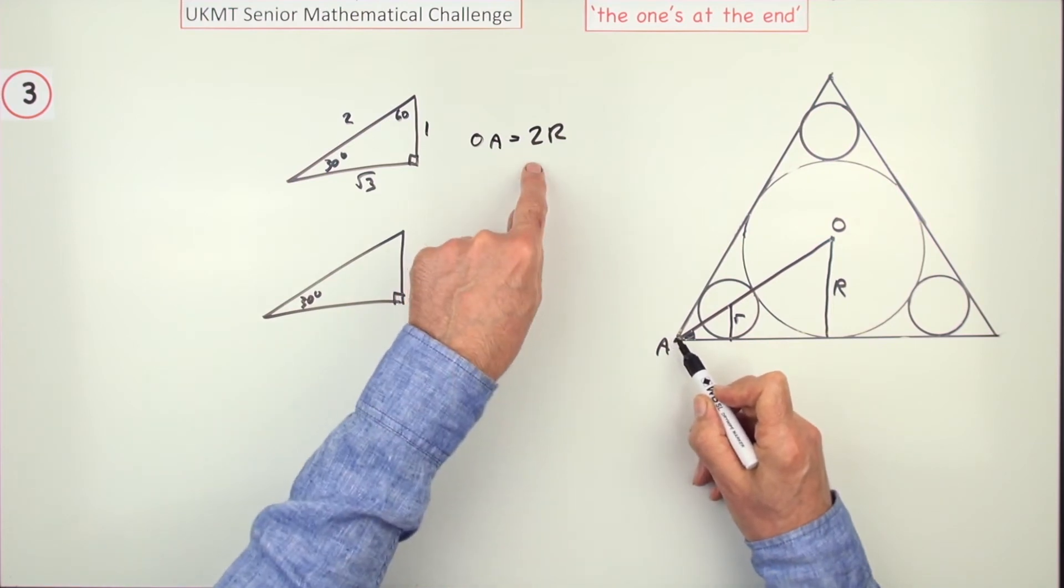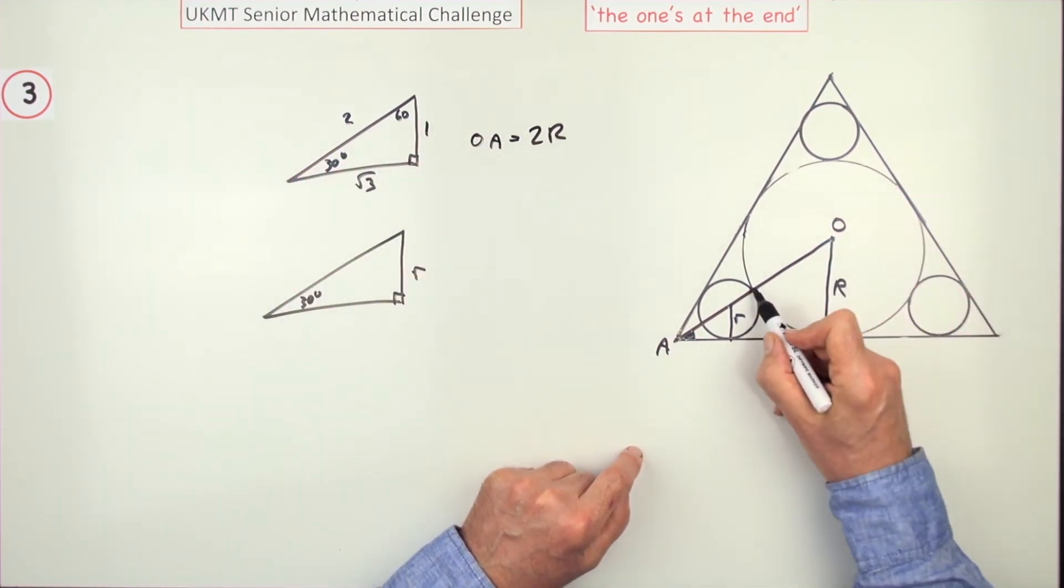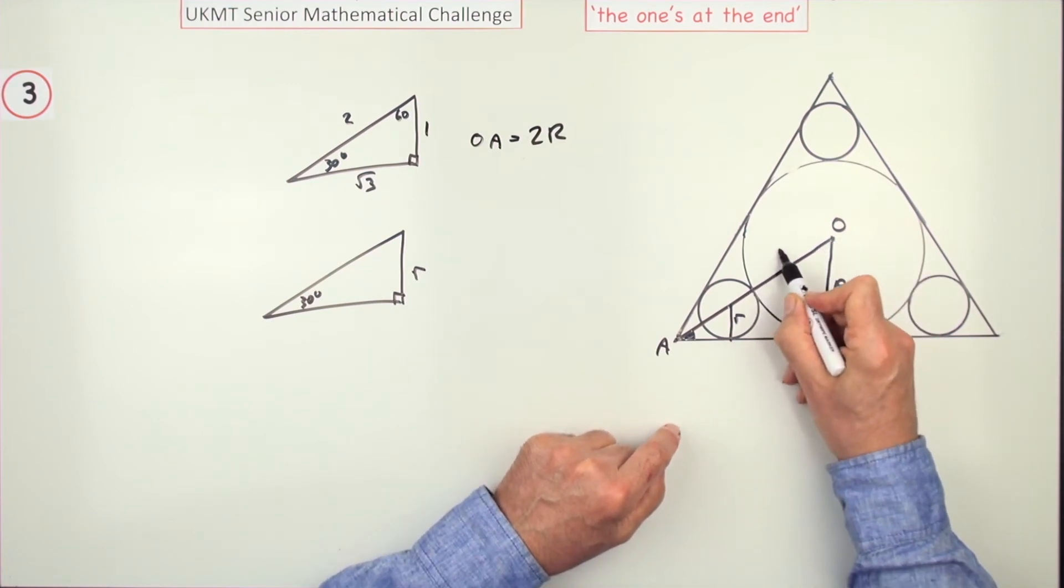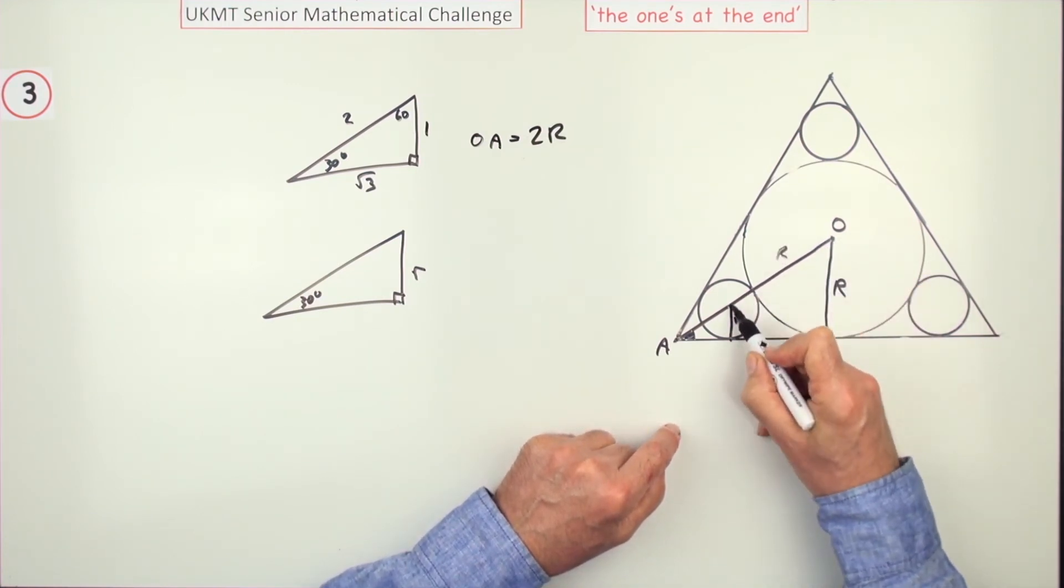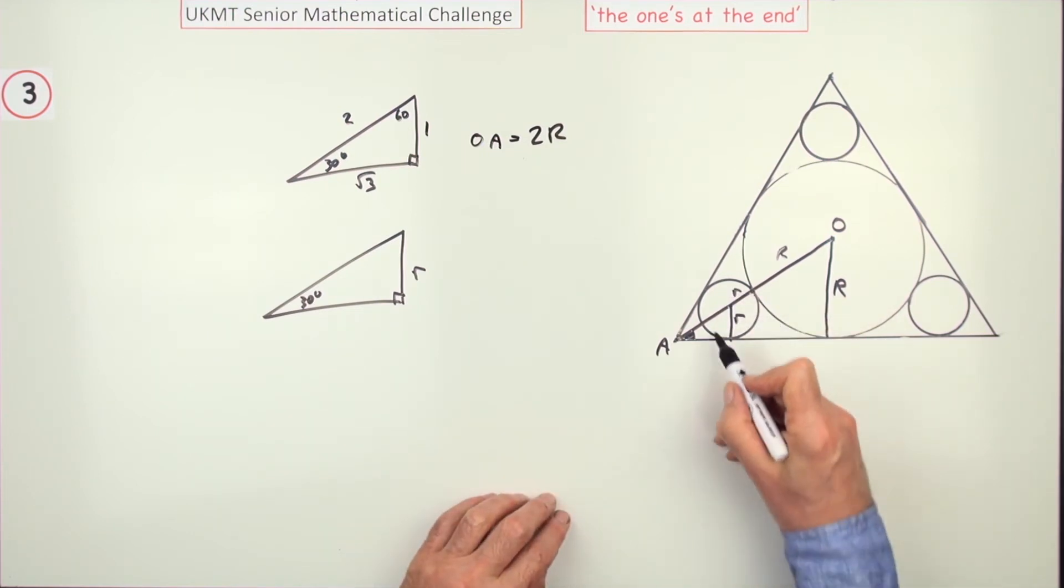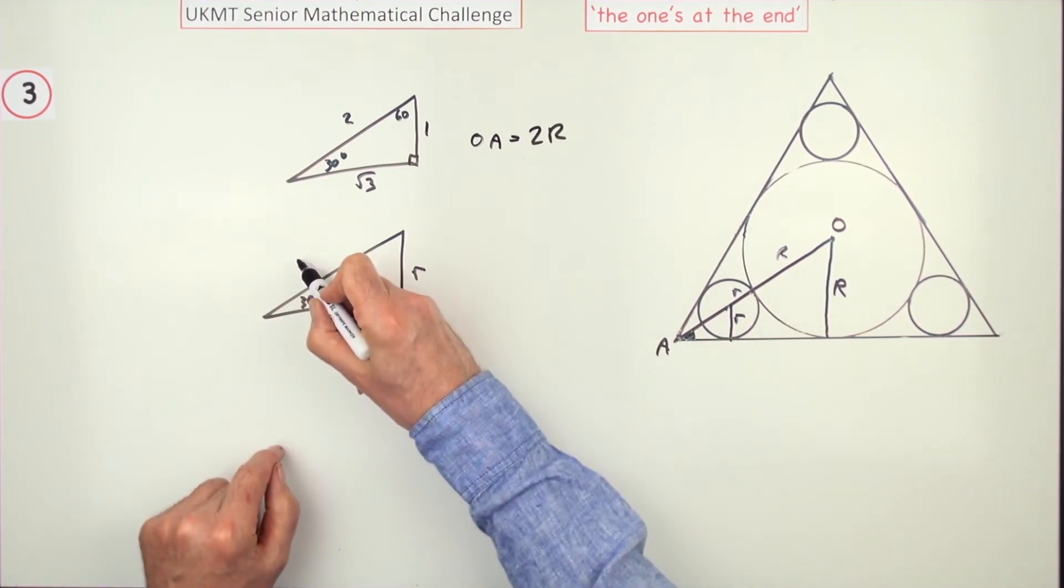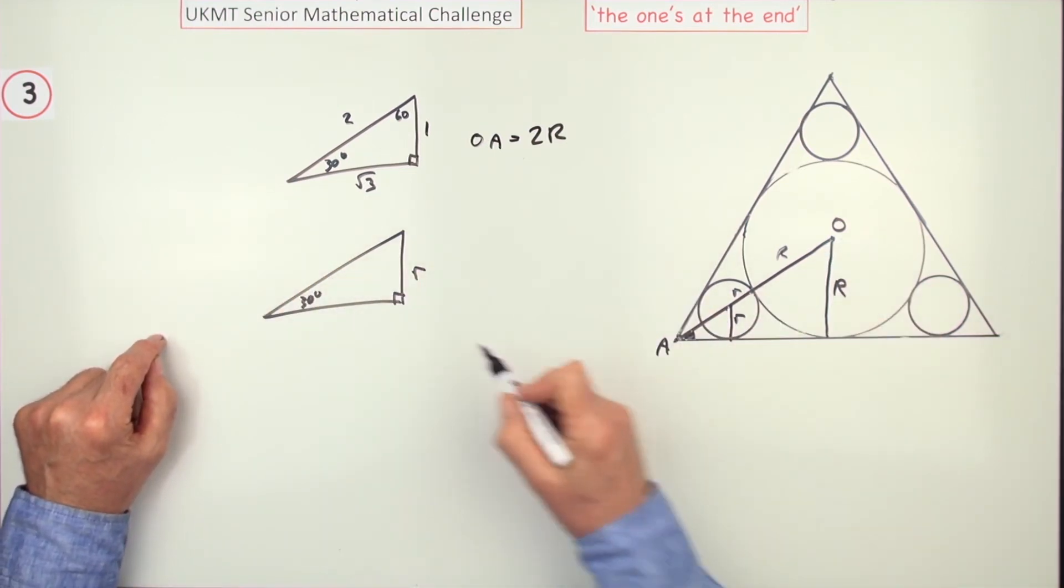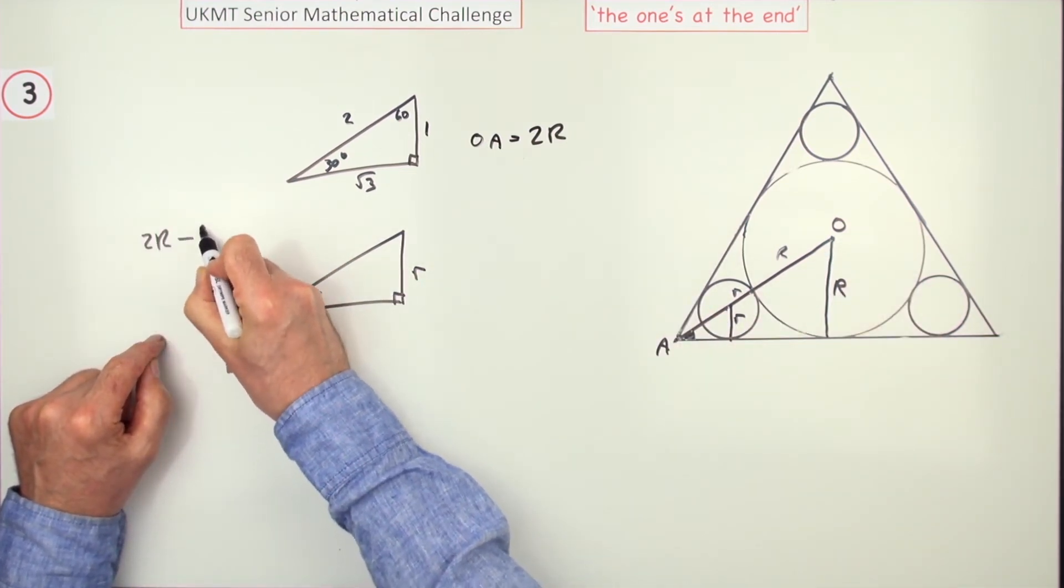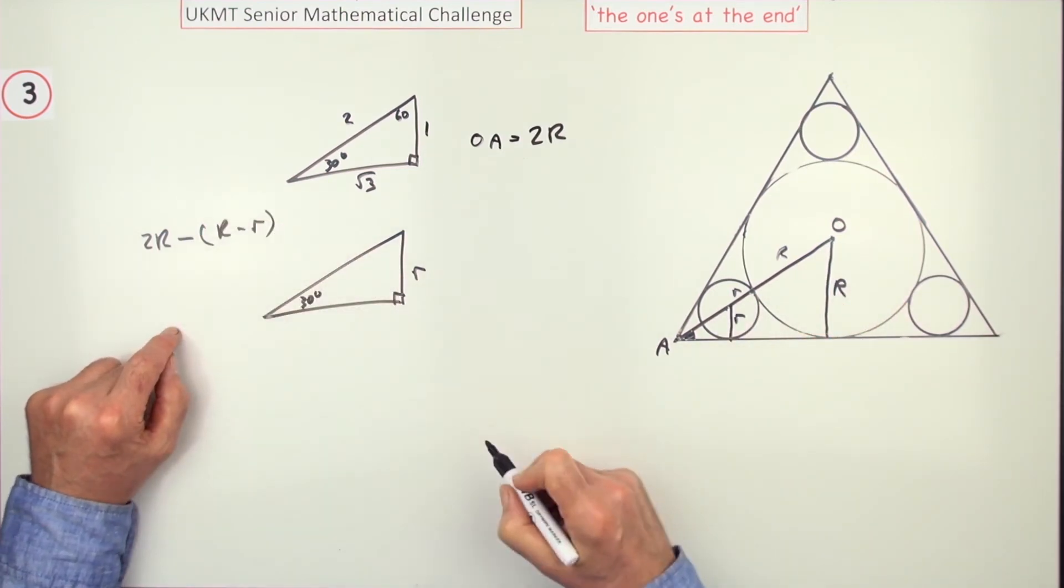Now, OA is 2r from this triangle, but OA is made up of several parts. This part is the radius, again, obviously. This part, again, is the radius of the smaller one. So the part I want is whatever's left over. So, this part here will be OA, which is 2r, minus what I've got so far, which is big R minus we r.